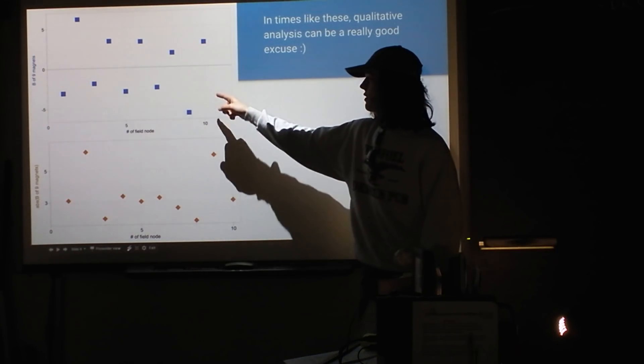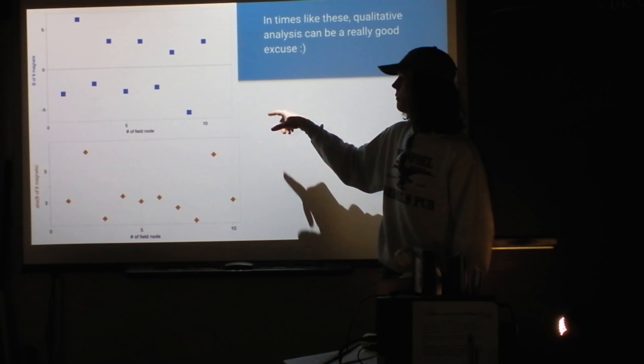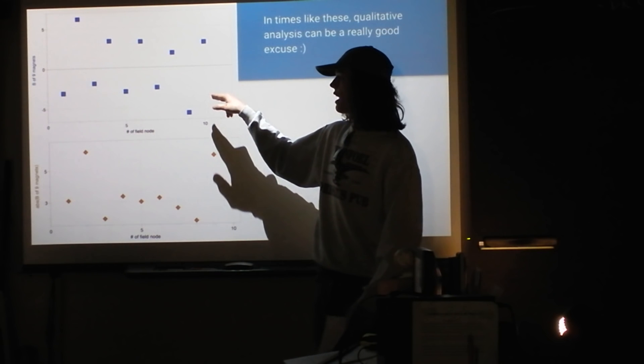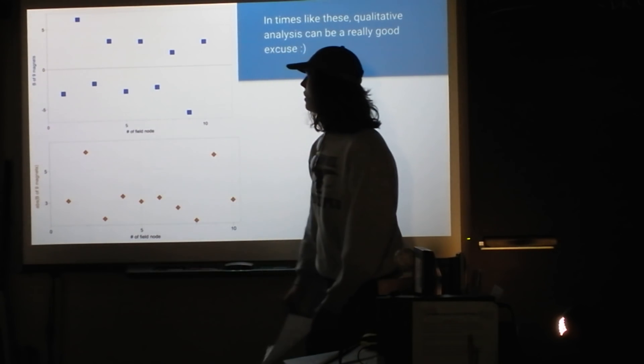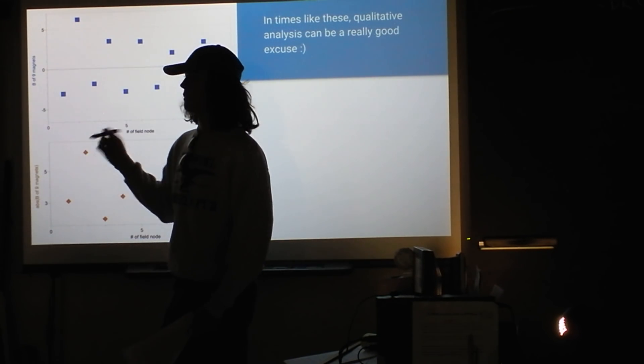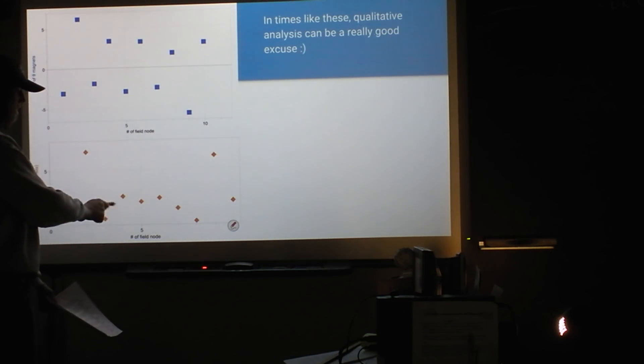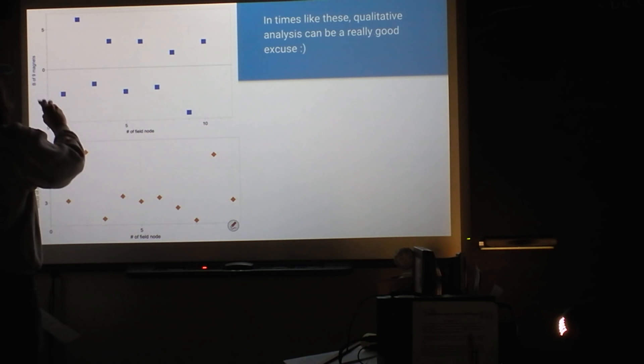So I decided I would test the field strength at a given distance away from the array, at each node, because there were lumps around each array. And so I got this graph. I chose to show the one with nine magnets. I did eight, nine, and ten for this experiment. But these graphs were the most pretty. I don't know why, but this first graph has a beautiful symmetry along this line here, which I don't know why that would be.